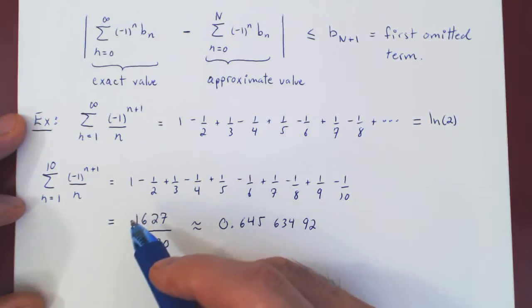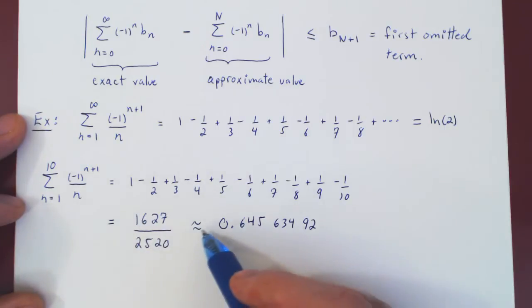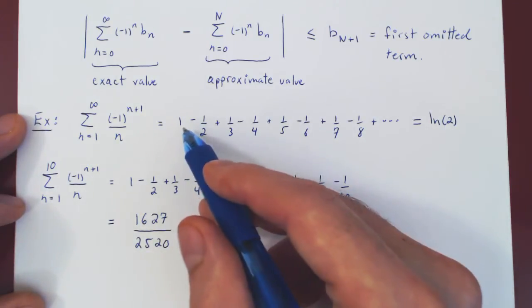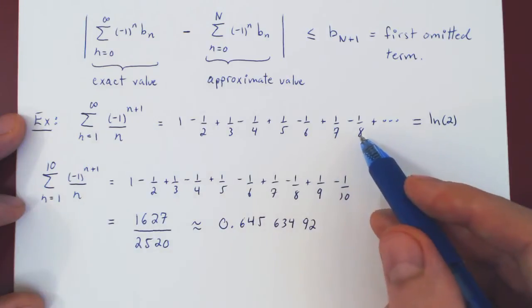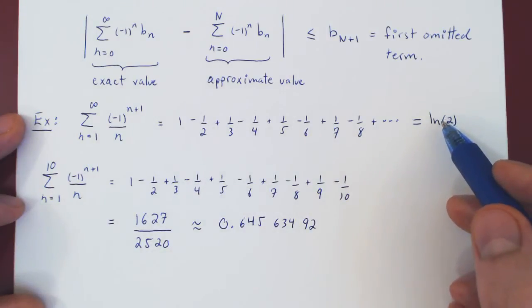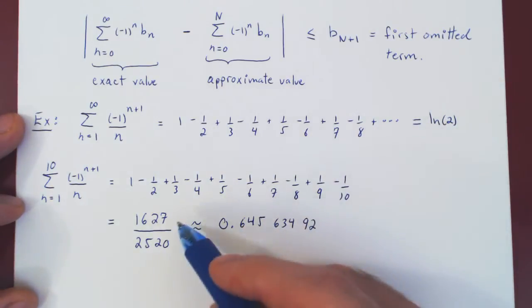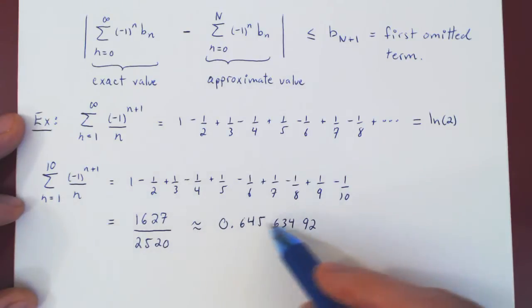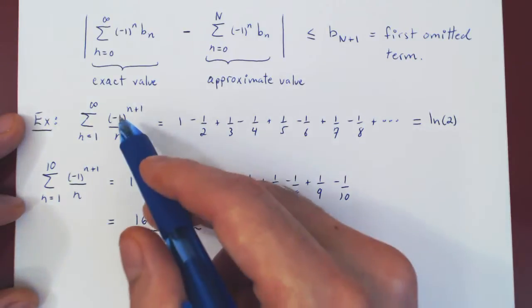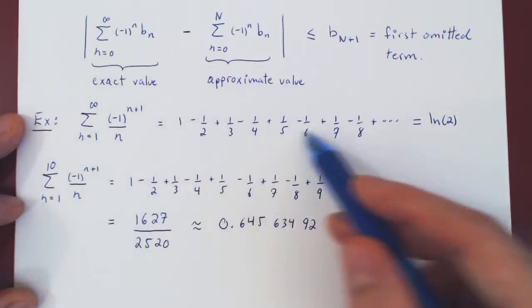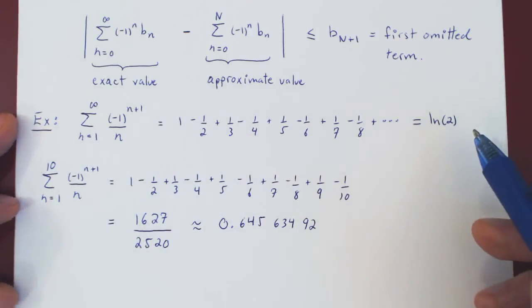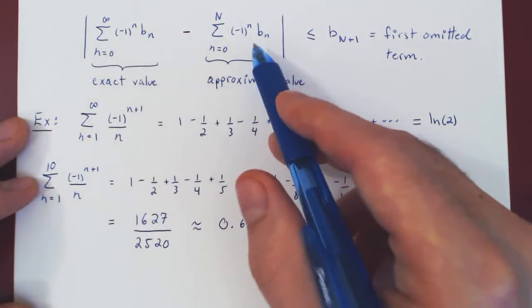So there you go. So now we have an approximate value for the infinite series, and more interestingly, for ln of 2. Well, we now ask, of course, how good is our approximation? How close is this to the exact value of the series, therefore to ln of 2? Well, we will use our error estimate.